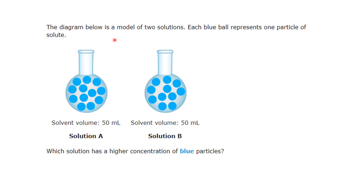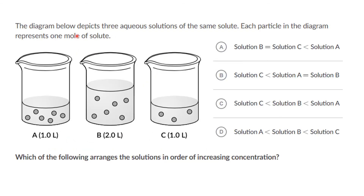The next question: the diagram below shows a model of two solutions — Solution A and Solution B — each blue ball represents one particle of solute. In both, the solvent volume is 50 mL. Which solution has a higher concentration of blue particles? Concentration is the number of particles of solute divided by the volume of solution. Solution A has 12 particles and Solution B has 11 particles, so Solution A has a higher concentration.